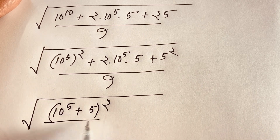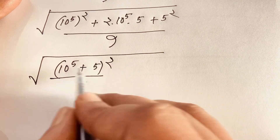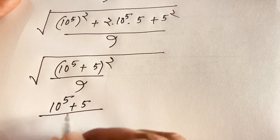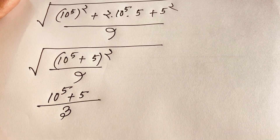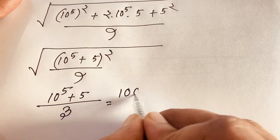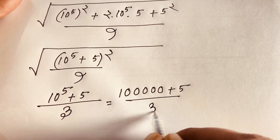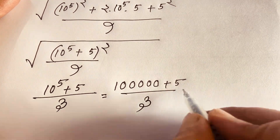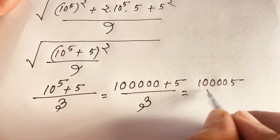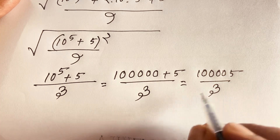We know the exponential law: this times this gives 10 to the power 10 plus 2 times 10 to the power 5 times 5 plus 5 squared, and 5 squared is 25. According to the law a² + 2ab + b², it equals (a + b)² — so this is (10 to the power 5 plus 5) squared over 9. The square root cancels, giving us 10 to the power 5 plus 5, and square root of 9 is 3. So we get (100000 + 5) over 3.